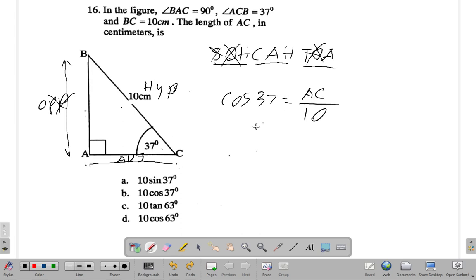If I should transpose for AC, what I could do is put this over one and then do a little cross multiply. I could say AC by one is equal to 10 times cos 37. So AC by one is just AC, which is 10 cos 37. Seems like B.